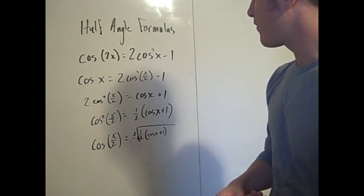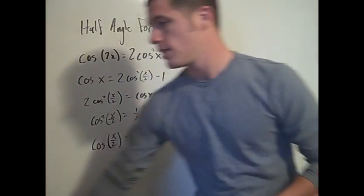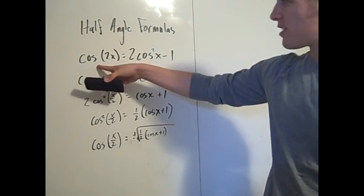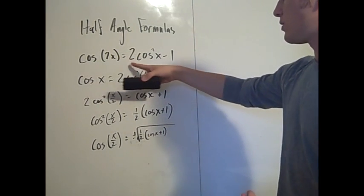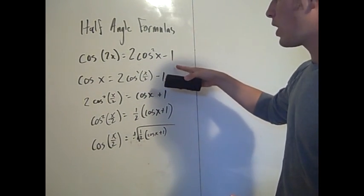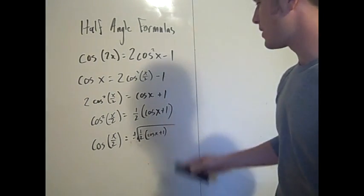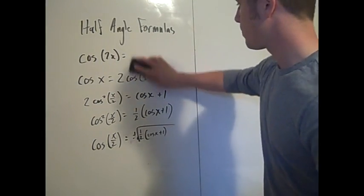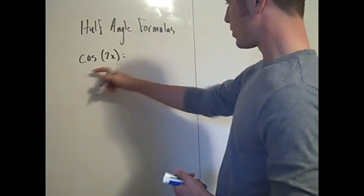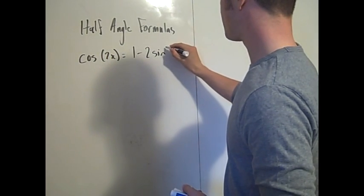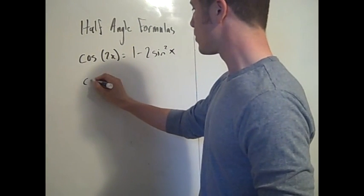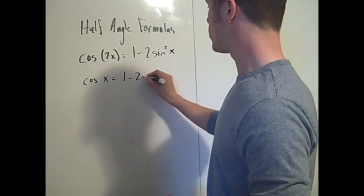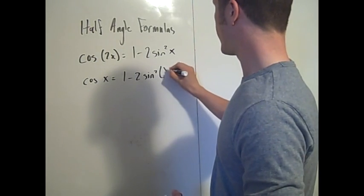We derive the half angle formula for sine using a different form of the double angle formula for cosine. For cosine we used 2 cosine squared x minus 1, but now we'll use the form that deals with sine squared x: cosine 2x equals 1 minus 2 sine squared x. We can rewrite this as cosine x equals 1 minus 2 sine squared of x/2.